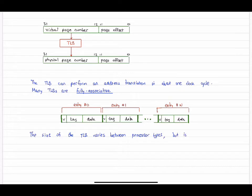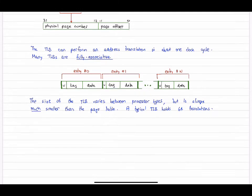Now the size of this thing is generally very relatively small, varies between processor types, but in general is always much smaller than the page table for each process. So there's a tiny subset of entries in the TLB. A typical TLB holds 64 translations, sometimes more, sometimes less.